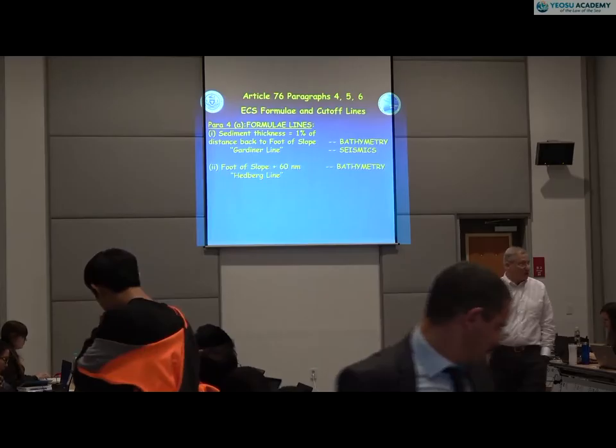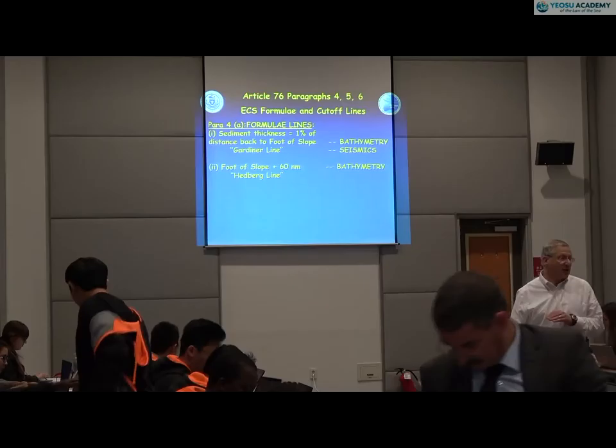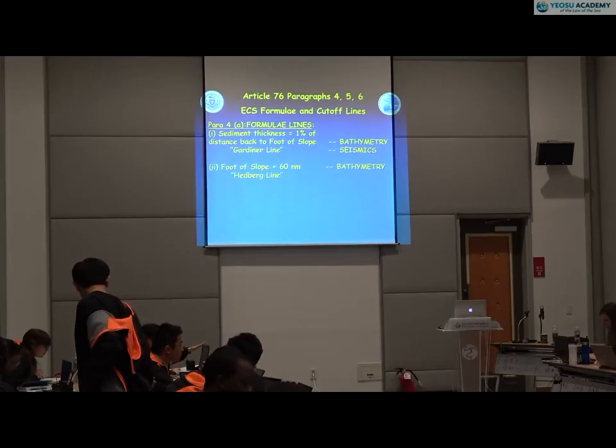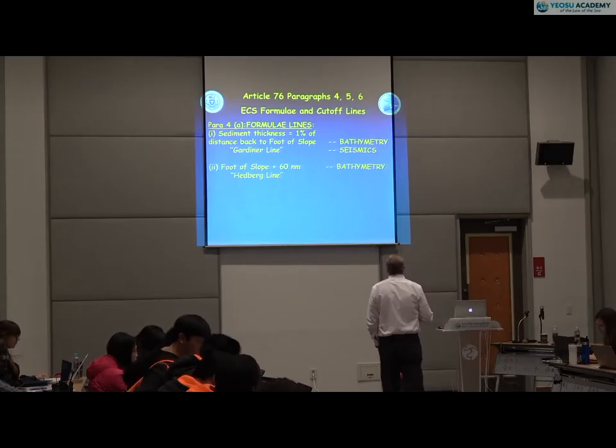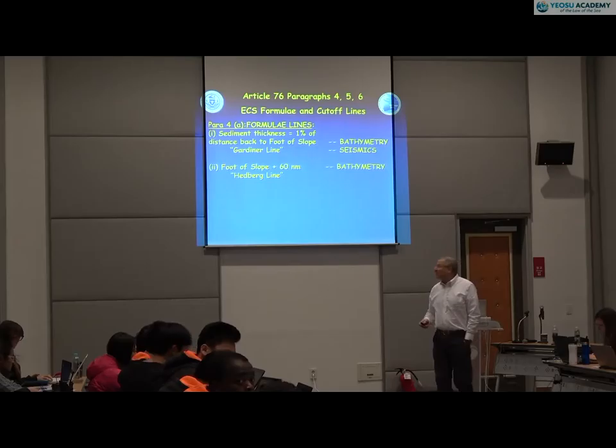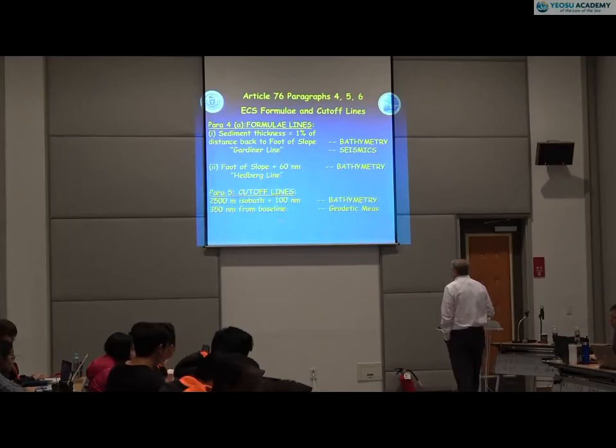We need to find the foot of the slope, so we need the bathymetry — the depth of the sea floor. We also need to understand how thick the sediments are. We need to use something called seismic profiling to look into the sediment and see how far it goes. For paragraph 4A, the sediment thickness Gardner line, we need the seismic depth. For paragraph 4B, just the bathymetric formula, all we really need is the depth of the bathymetry.